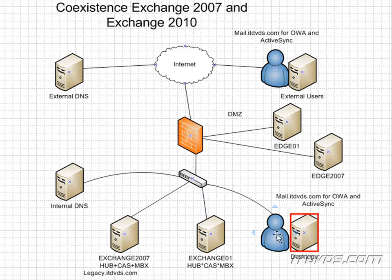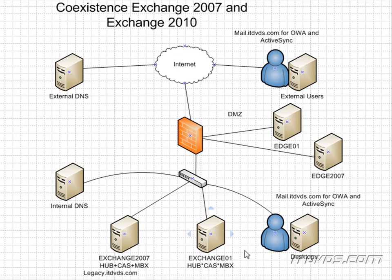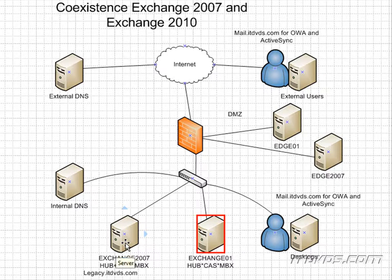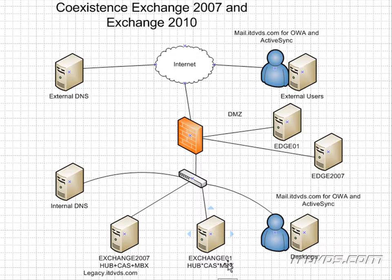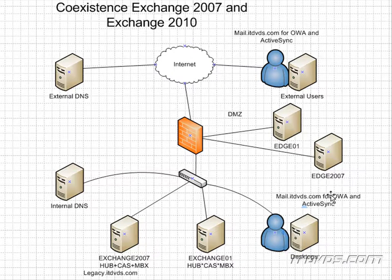Outlook clients internal to the network will actually connect to whatever client access server they have their mailbox on. So if they're going to connect to Exchange 2007, their mailbox is going to be on Exchange 2007. If their mailbox is on Exchange 2010, they'll connect to the client access server on Exchange 2010. But for things like Outlook Web Access or ActiveSync, we're going to set up a legacy domain so that clients, whether internal or external, will be able to use the same domain name. In our example, it's going to be mail.itdvds.com.